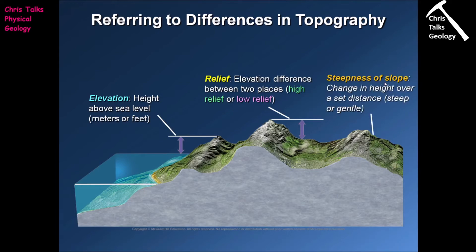The final thing we can use to describe terrain is the steepness of the slope. Steepness is simply a change in height over a set distance — if I walked one kilometre horizontally, what would be the change in height vertically? It's not uncommon for steepness of slope to be given as a ratio, such as one to whatever the change in height is. In general terms we'll typically refer to slope as either steep or gentle, but we can also get numerical values such as elevation, relief between two locations, and the ratios defining steepness of slope.